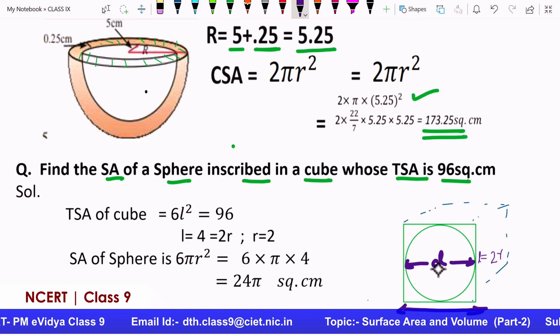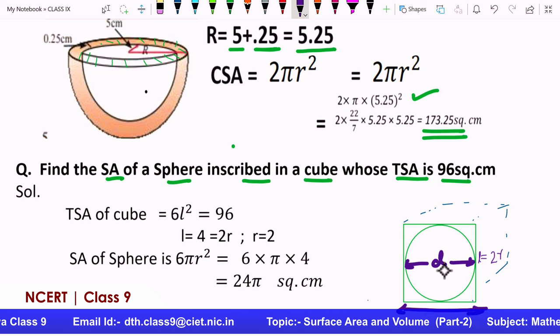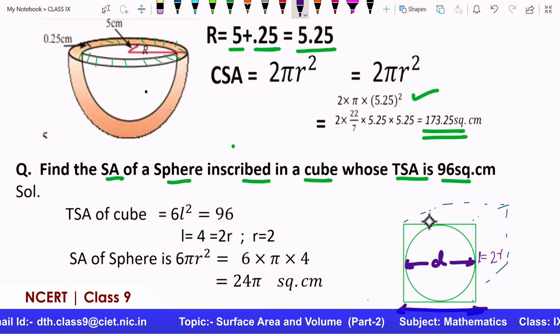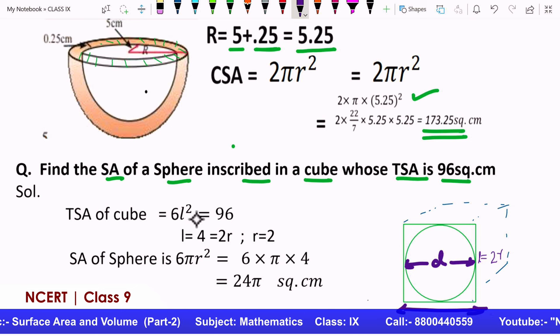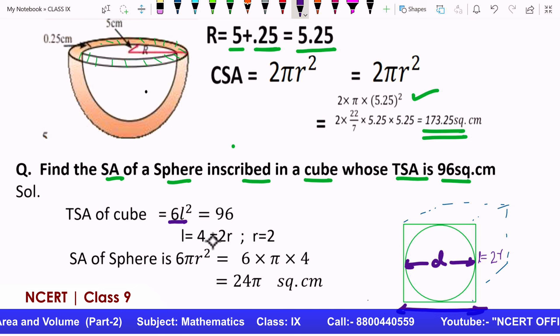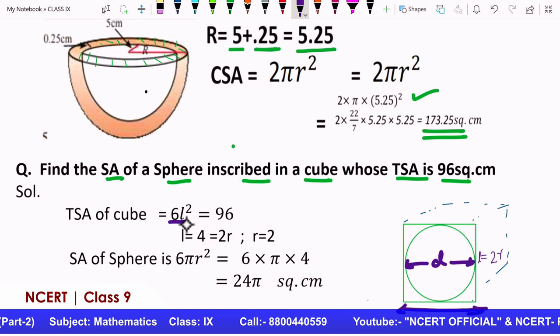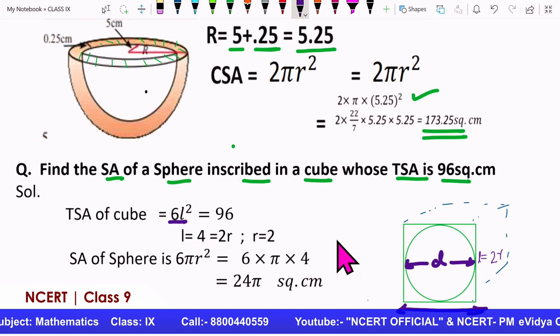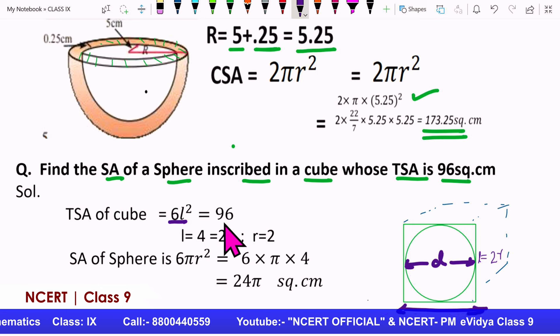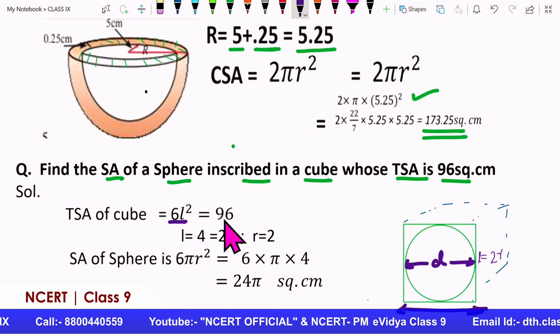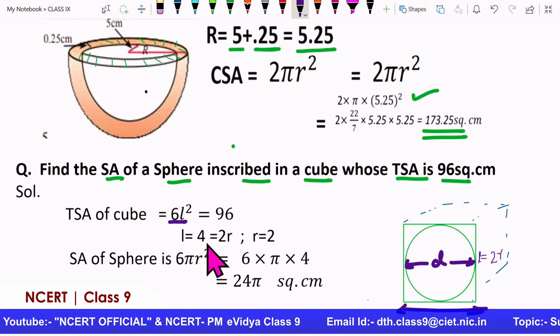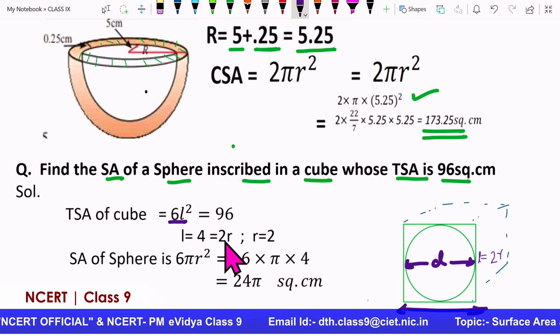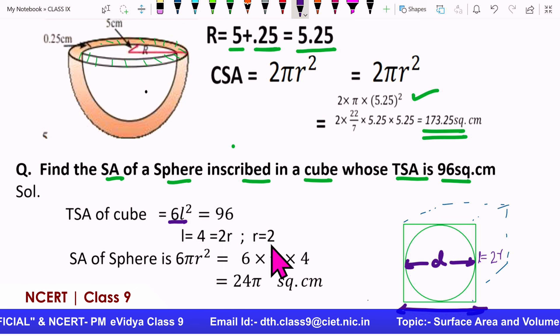So when you see that sphere inside that cube, what information do you get? You need to identify this. The information we have is this length, this length is actually the diameter of the sphere, isn't it, the diameter of the sphere. Yes. So that means first we'll find the diameter of the sphere. Where will we get it from? If we have the cube's edge length. So that means this formula, 96 square centimeters is the total surface area of the cube. We will apply the formula for the total surface area of the cube, that is 6L².